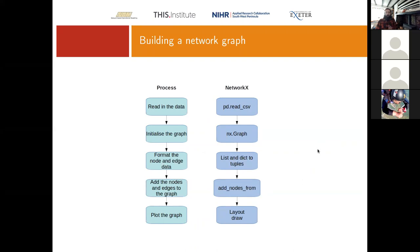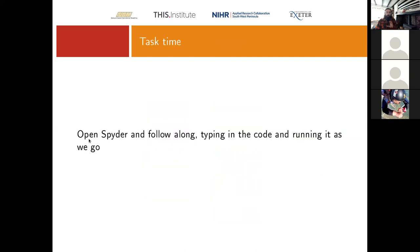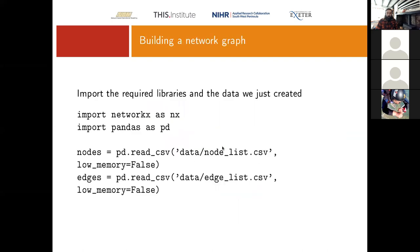Open a new script in Spyder. The node list and edge list CSVs created in the last task should already be in the data subfolder. Start by importing NetworkX as nx — the conventional shortening — then import pandas as pd. Read the node list into a variable called nodes and the edge list into a variable called edges.